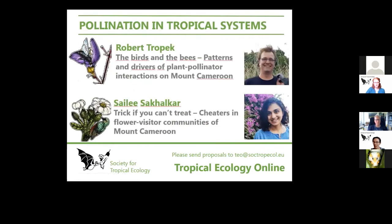Today we are going to discuss pollination in tropical systems. The first speaker is Robert Tropek, who heads a laboratory split across two institutions — partly at Charles University in Prague and partly in the laboratory of community ecology in the biology center in České Budějovice. The second talk will be given by Siley Sakhalakar, a PhD student working on pollination systems along latitudinal gradients in Robert's laboratory.